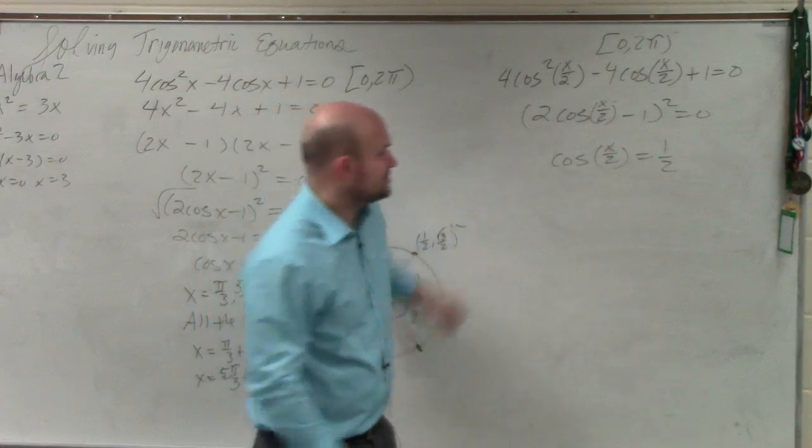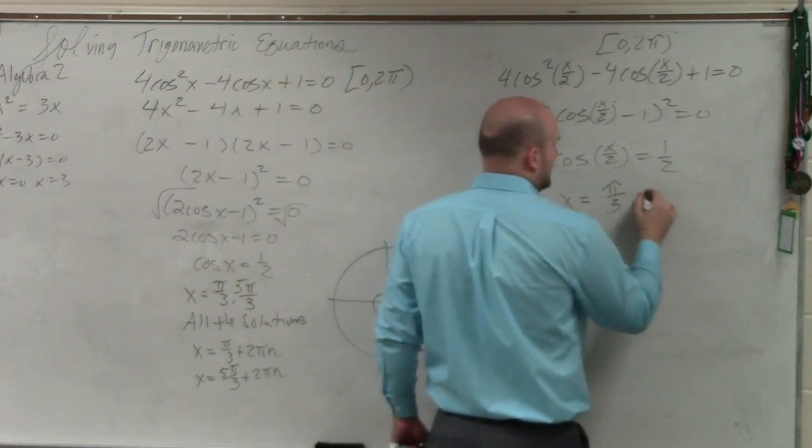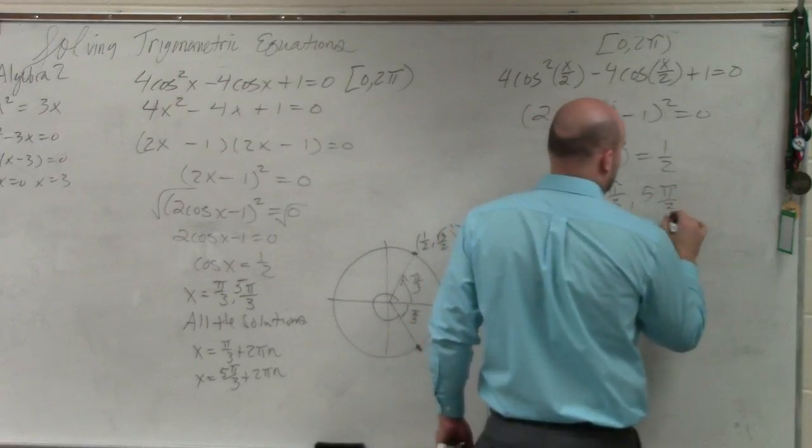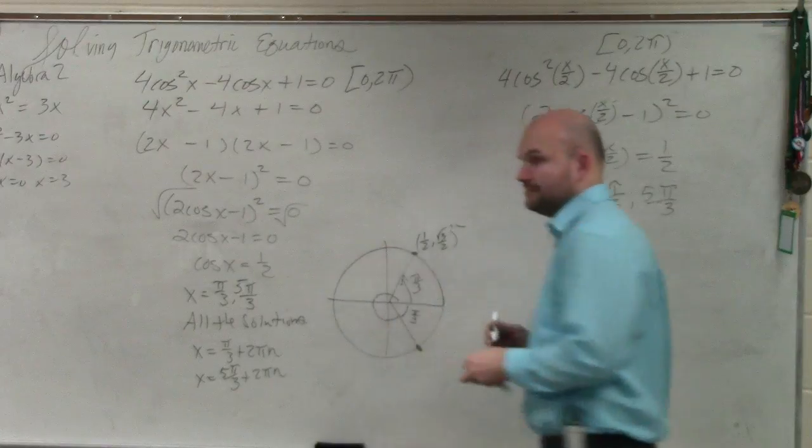Then we've got to find our solutions, which we said x equals pi over 3 and 5 pi over 3. But we're not actually solving for x in this example. We're solving for x divided by 2, right?